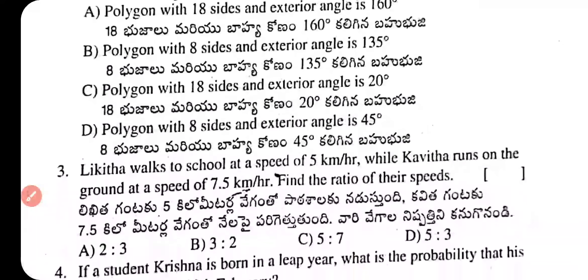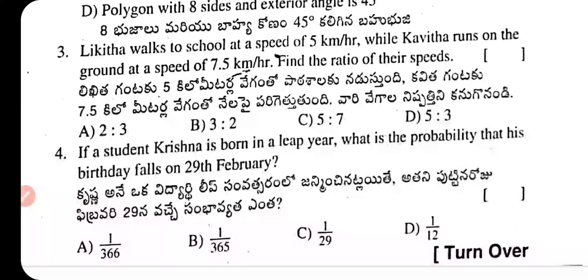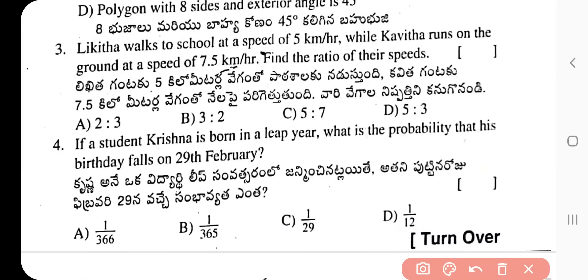Question 3: Lithica walks to school at a speed of 5 km/hr and Kavita runs at a speed of 7.5 km/hr. Find the ratio of their speeds. Calculate the simplest form: 5 ratio 7.5, which simplifies to 2 ratio 3. The answer is 2:3.